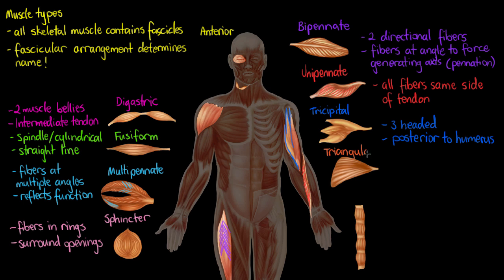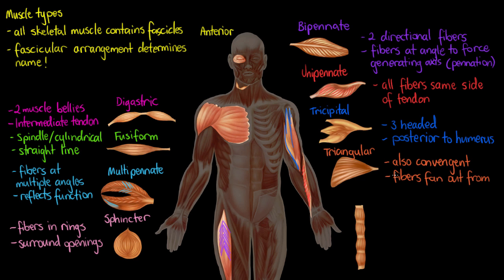One of the last types of muscle we're going to look at is called triangular — you may also hear it called a convergent or fan muscle. A good example is the pectoralis major. It's called convergent or fan-shaped because all of the fibers fan out from the tendon, which attaches to the humerus at the bicipital groove and extends out across the chest.